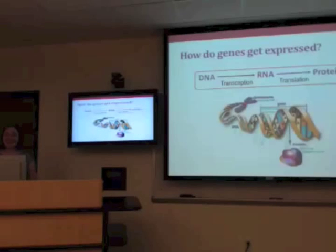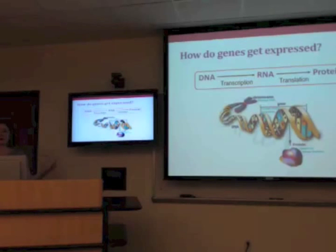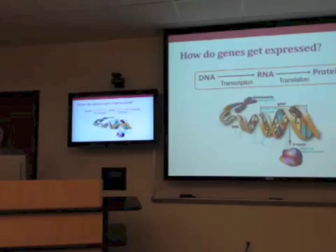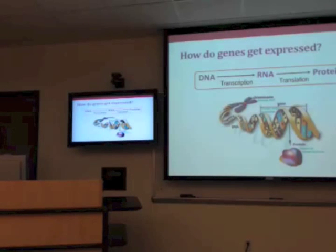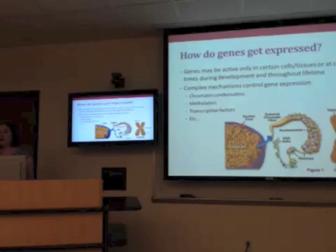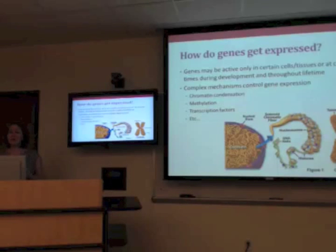How do genes get expressed? A gene is a chemical sequence — DNA — and that DNA sequence is transcribed into a related chemical message called RNA. That RNA message is then translated into protein. There are many things that control that process of transcription and translation. Genes may only be active in certain cells or tissues at certain times during development and throughout the lifetime — it's not that all 20,000 genes are on at the same time, but a very carefully orchestrated system of when some genes are on and some genes are off.